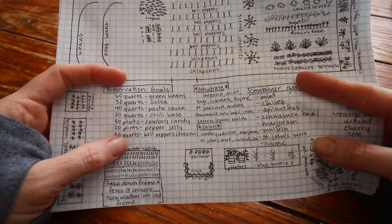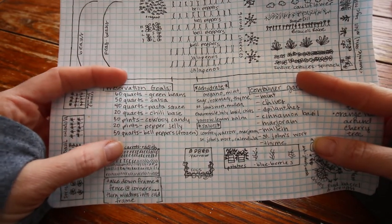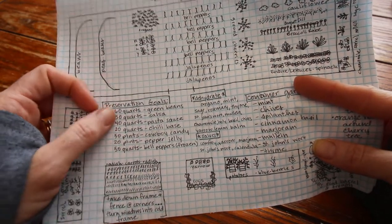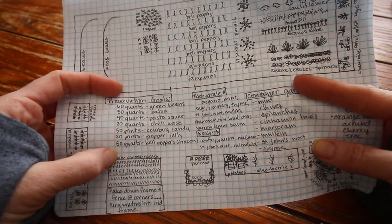And 20 pints of pepper jelly and 50 quarts of bell peppers. This is like quart bags we're gonna do because I freeze these.